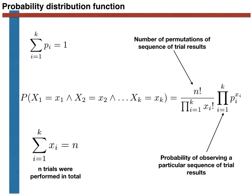In fact, if each trial has only two possible outcomes, the probability distribution for the multinomial random variable reduces to that of the binomial random variable.